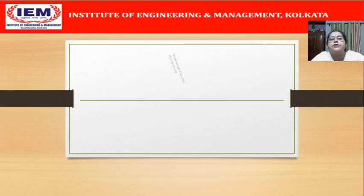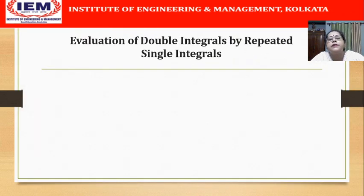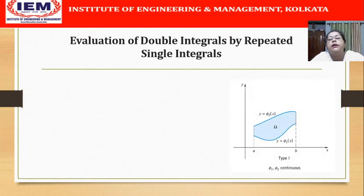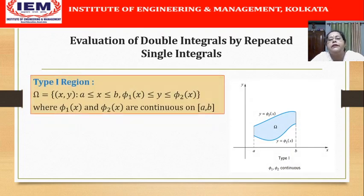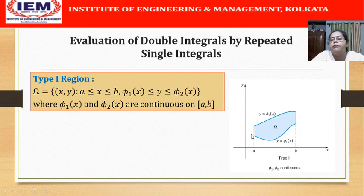Hello, welcome back to the lecture series on multivariate integration. Since the last two lectures we had been discussing how to evaluate double integrals, and we have seen that this is done by actually evaluating repeated single integrals. We have seen a rectangular region and in the last lecture we saw a non-rectangular region of Type 1, where y is varying from the lower curve phi_1(x) to the upper curve phi_2(x) and x is varying from a to b.